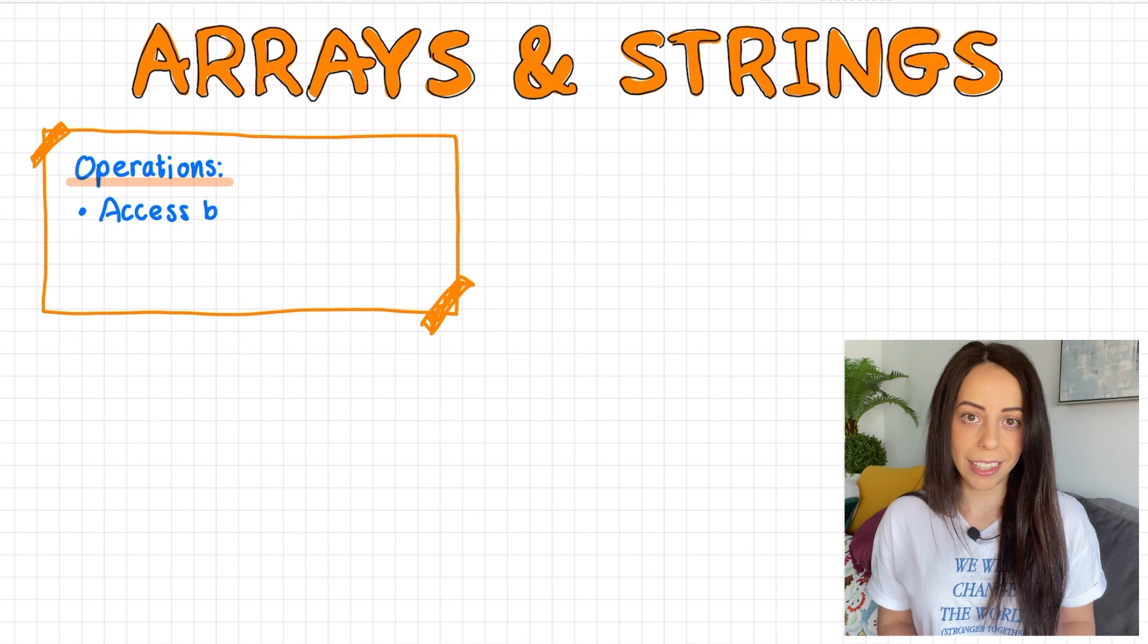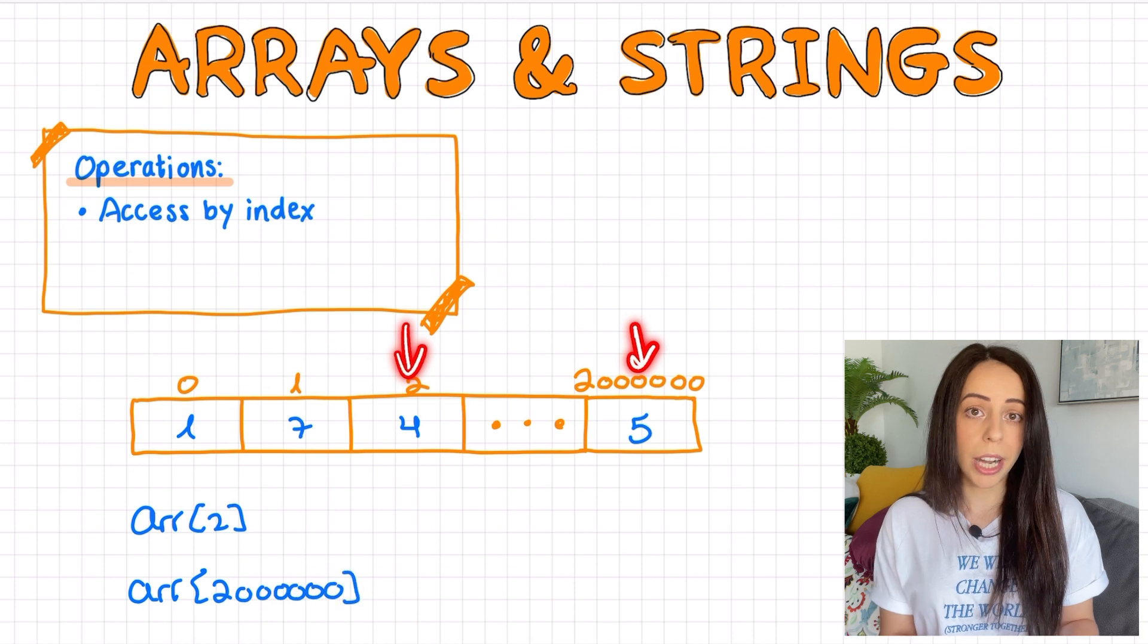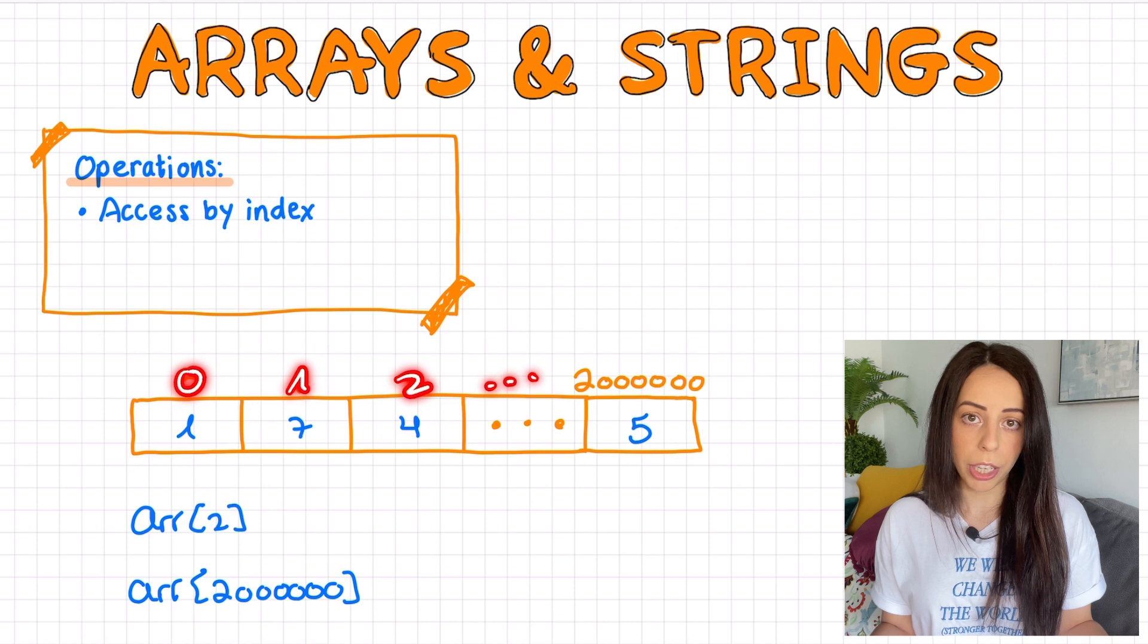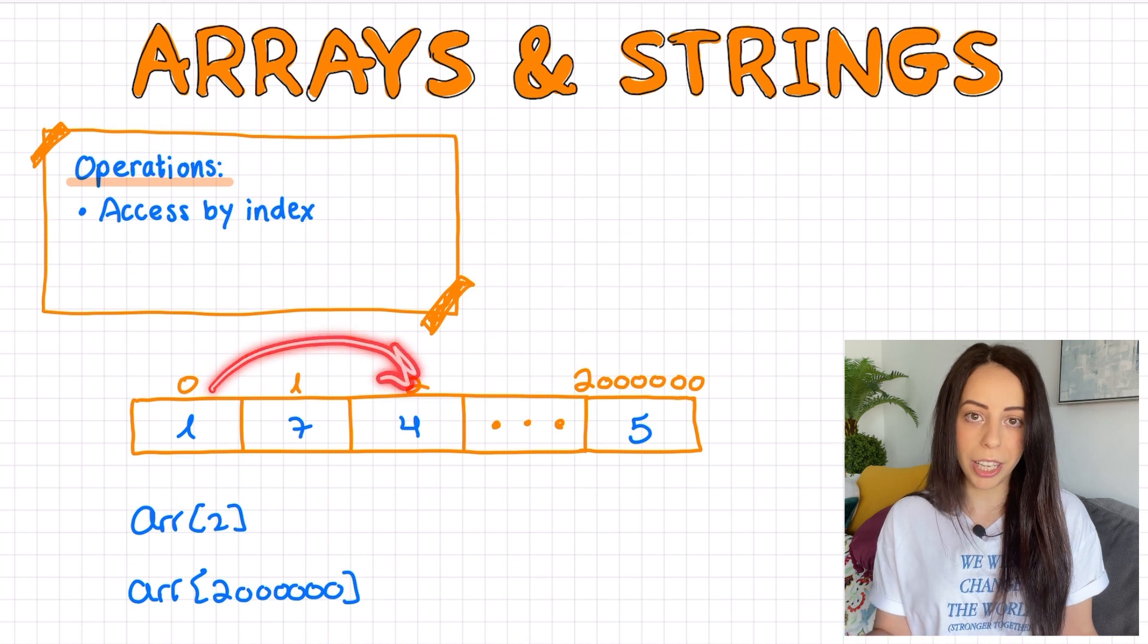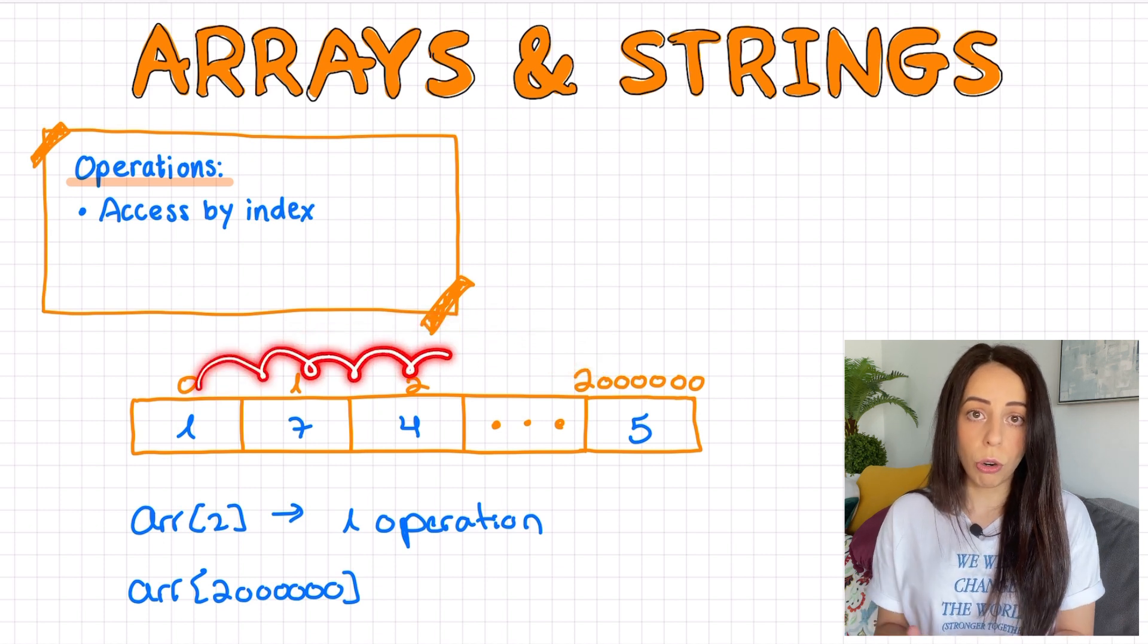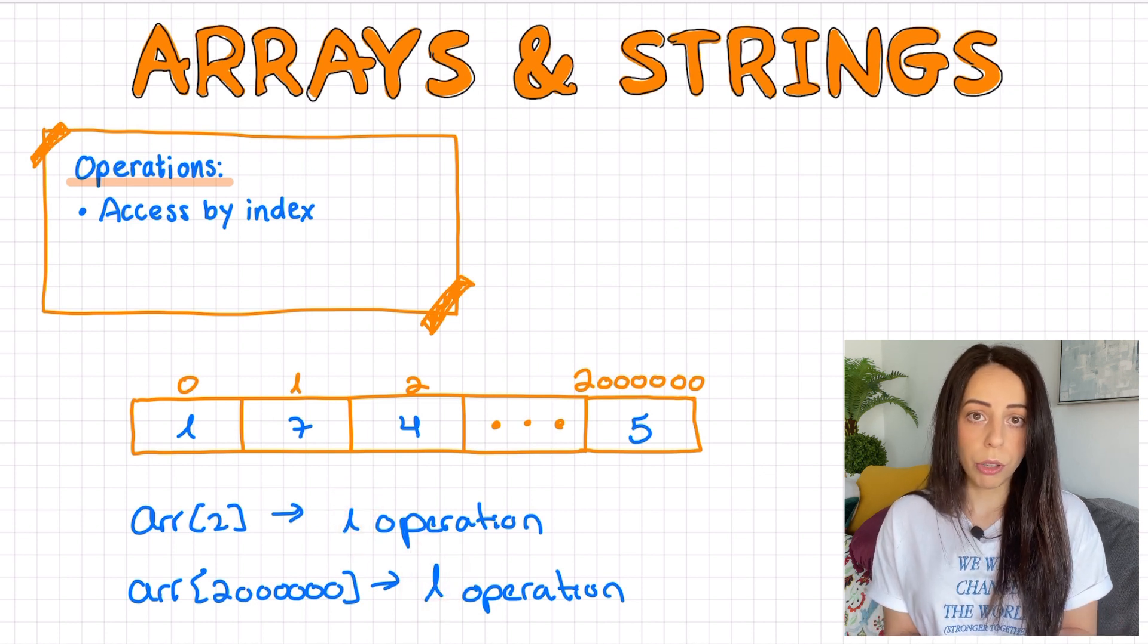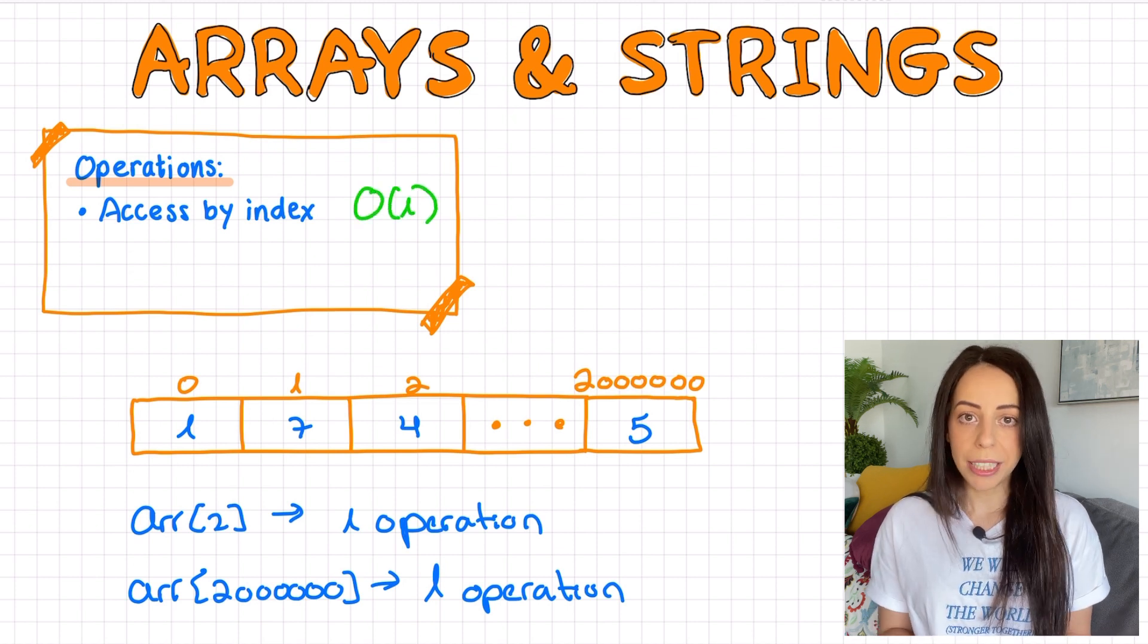The best thing about arrays is the fast access by index operation. Accessing an array at index 2 and accessing it at index 2 million will require the same amount of operations. The reason is that the elements are stored in consecutive memory locations. So to access index 2, all you have to do is add 2 to the starting address and jump straight to the right location. You don't need to walk over each element along the way. That is one add operation. To access index 2 million, you add 2 million to the starting address and jump to the right location. Again, no need to walk over 2 million elements. When the number of operations is a small constant that does not depend on the number of elements, we say that the time complexity is constant, also known as O of 1.